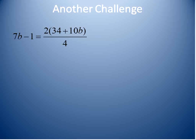And one more challenge question here. It's going to work very similar to what we did before. So, here, let's go ahead and solve this one. I'm going to start by getting rid of my fraction. I do that by multiplying both sides of this equation times 4. The 4s will cancel out over here, leaving us with 2 times 34 plus 10b. All right? And over on the left side, I'm going to multiply 4 times 7b, which will give me 28b, and 4 times negative 1, which gives me negative 4.